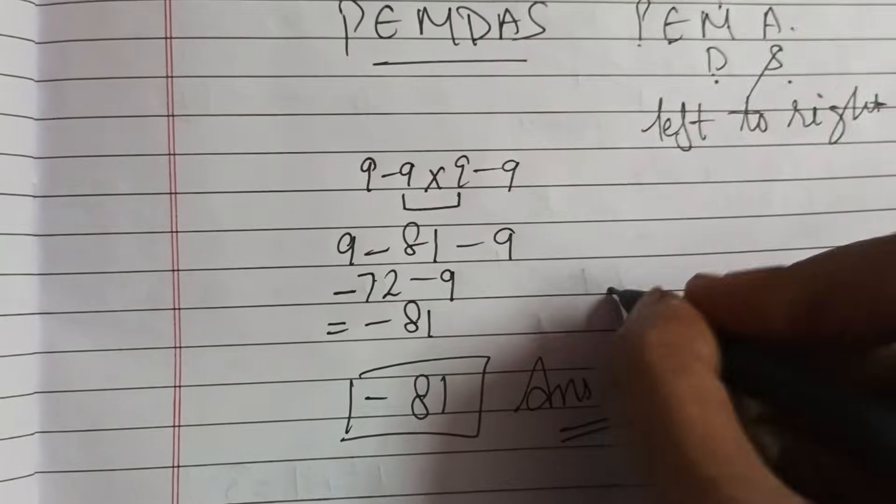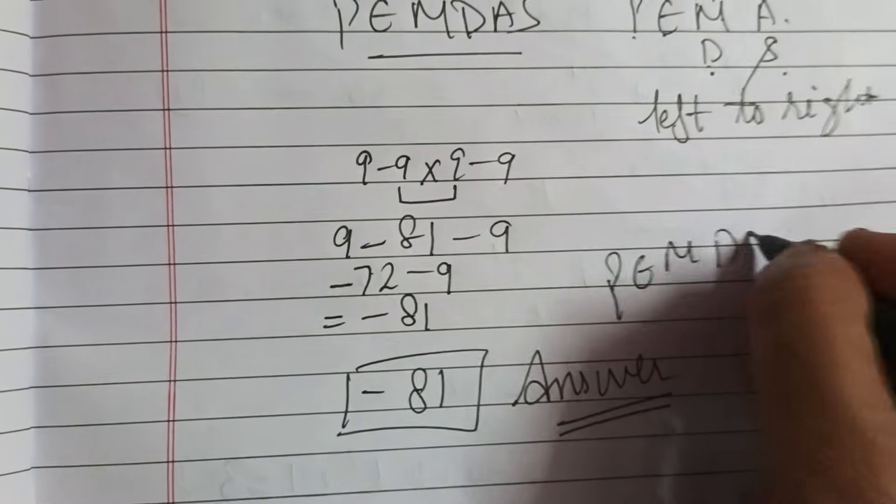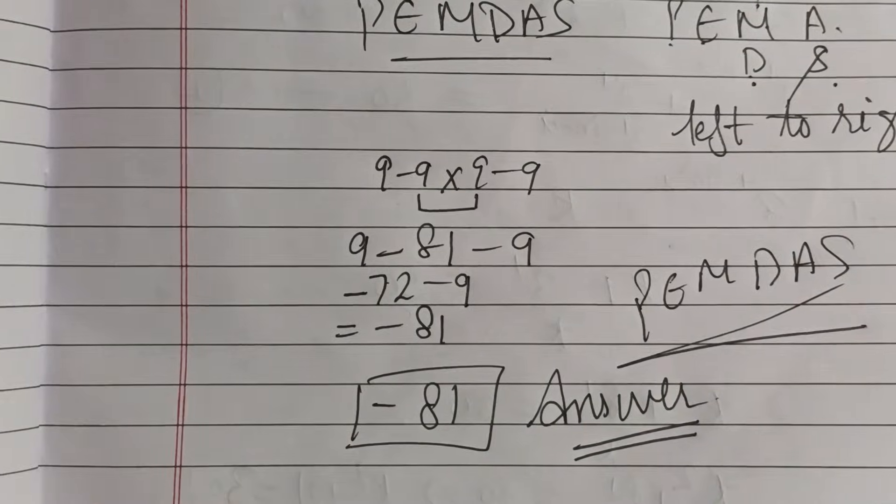So, minus 81 is our correct answer. Follow me for more such questions to avoid your mistakes in mathematics.